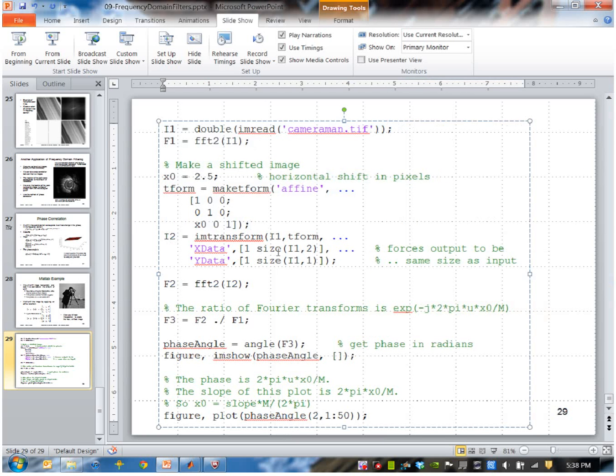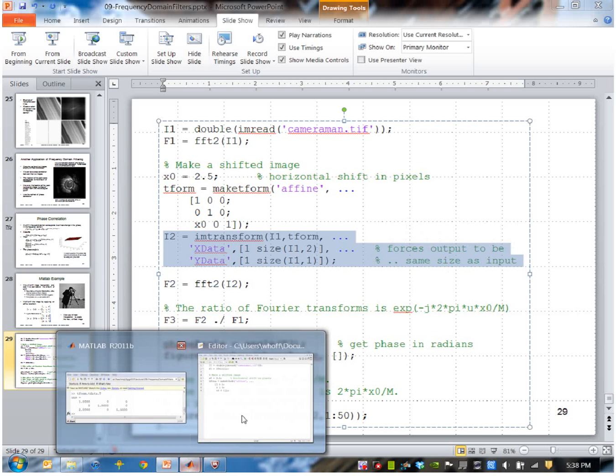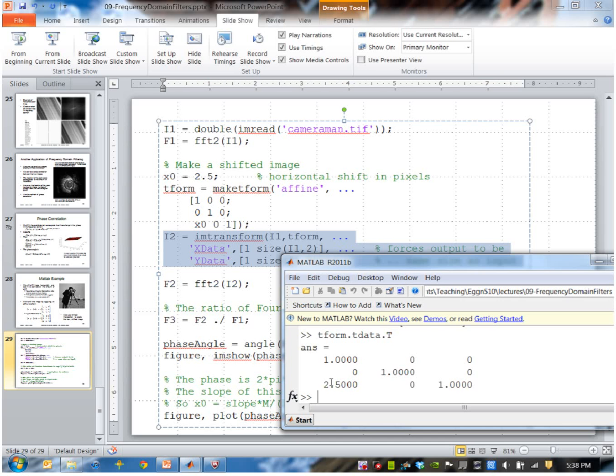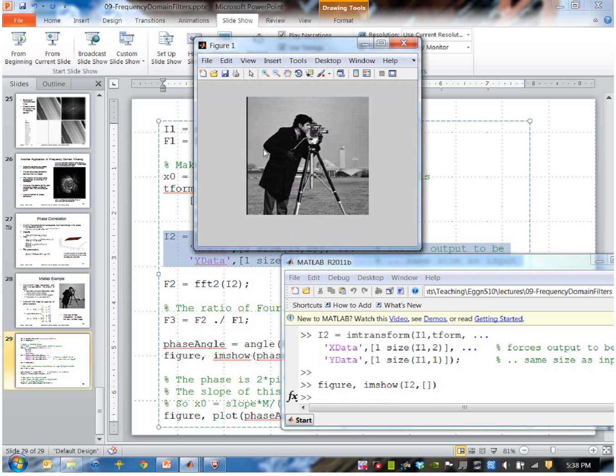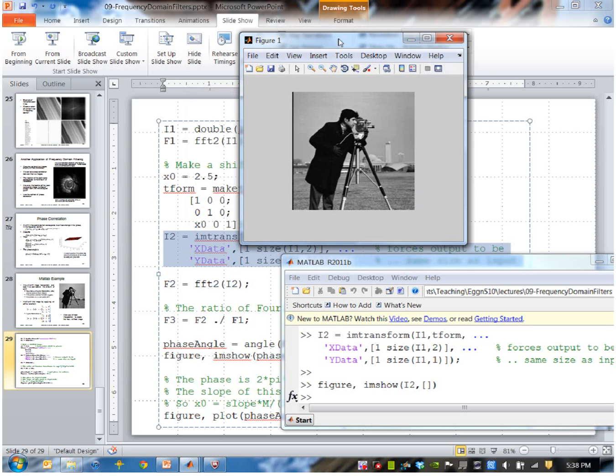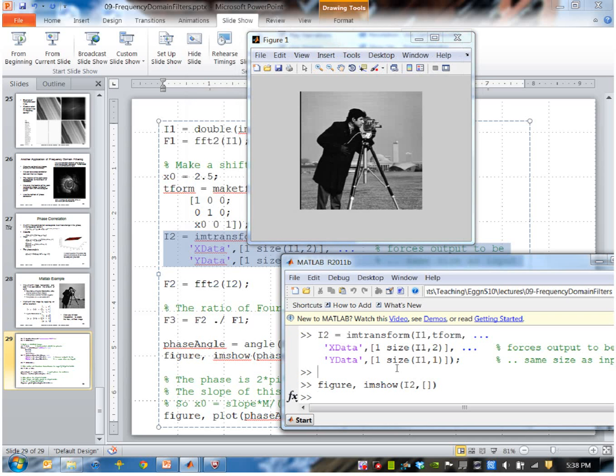Now I'll use MATLAB's IM transform function to create I2. I2 actually looks very similar to I1, but you can see it's shifted a little bit here.